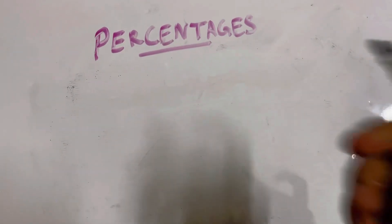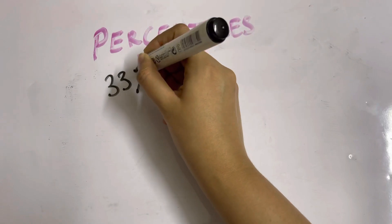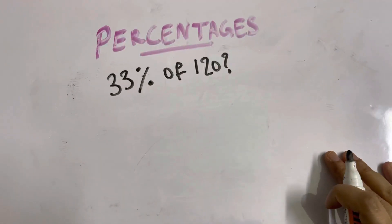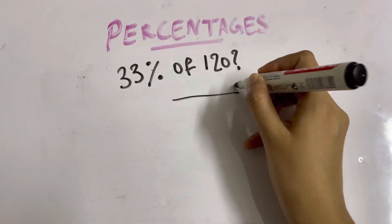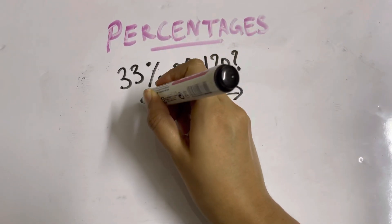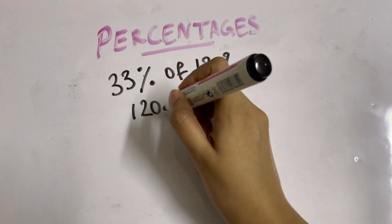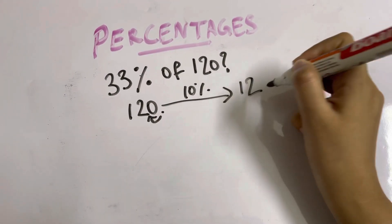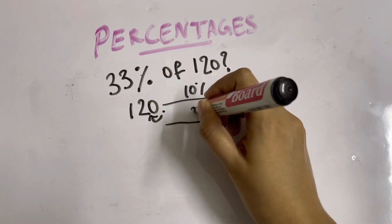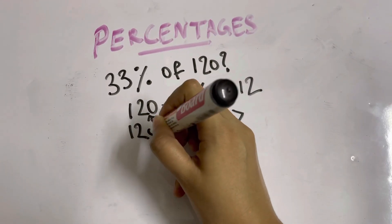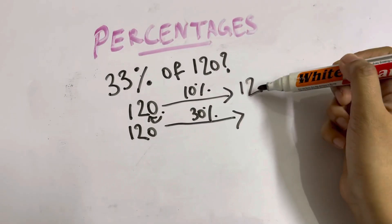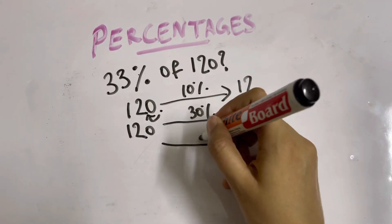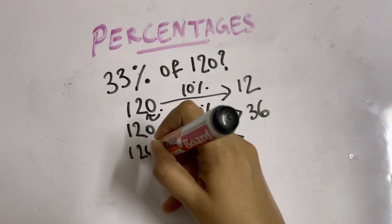Let's find out 33% of 120. Start with 10% of 120, which is 12. Then 30% of 120 is 3 multiplied by 10%, so 3 times 12 is 36. Now we need to find 1% as well.